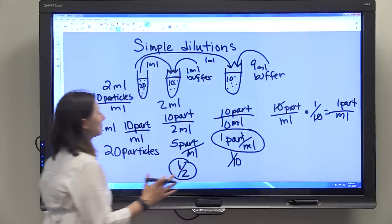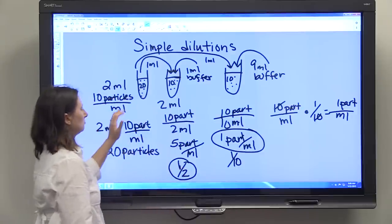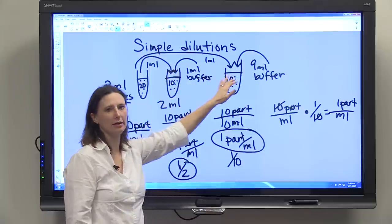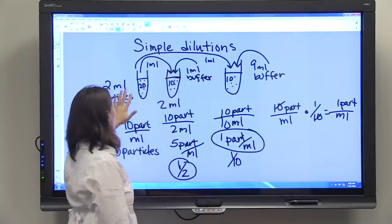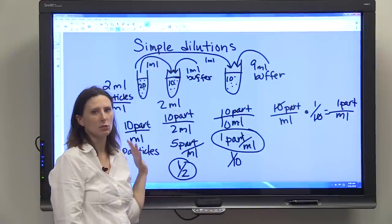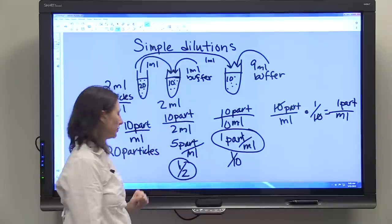So that is a simple dilution, we've just added 1 ml and 1 ml, or 1 ml and 9 ml's, we've just added 1 stock solution and 1 diluent, 1 time, so it's a simple dilution.